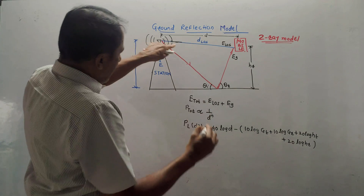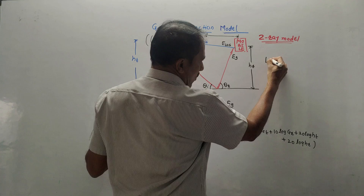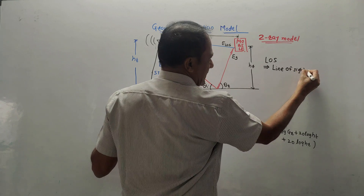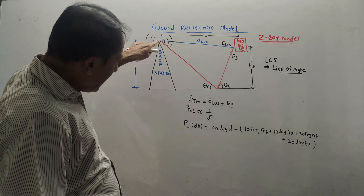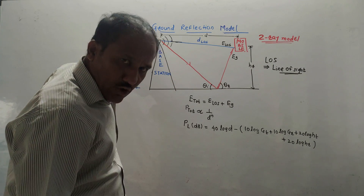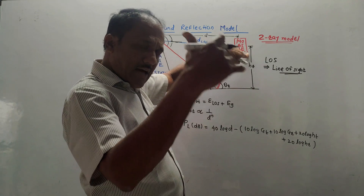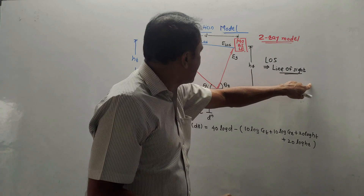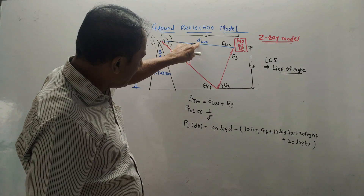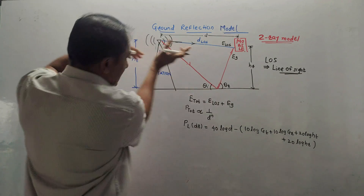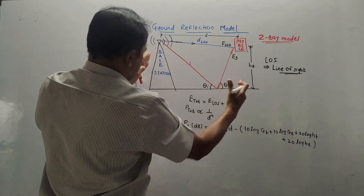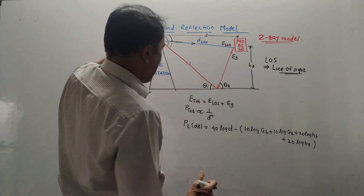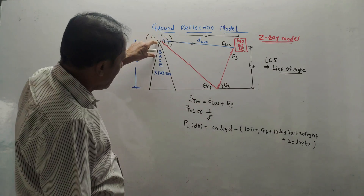I have written D-LOS. The term LOS stands for line of sight. Line of sight means a direct transmission from the transmitting antenna or base station towards the mobile, where the mobile acts as a receiver. This kind of transmission is known as line of sight transmission. The horizontal distance from the transmitting antenna to the mobile is denoted by notation T. D-LOS is a direct transmission from base station to the mobile.